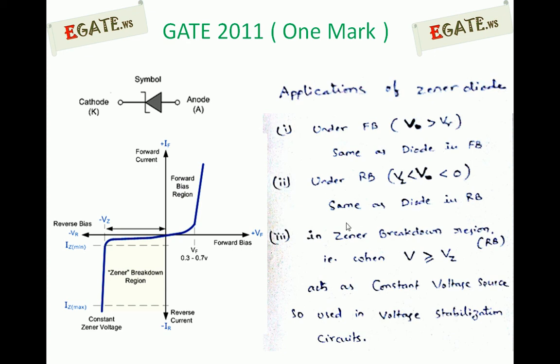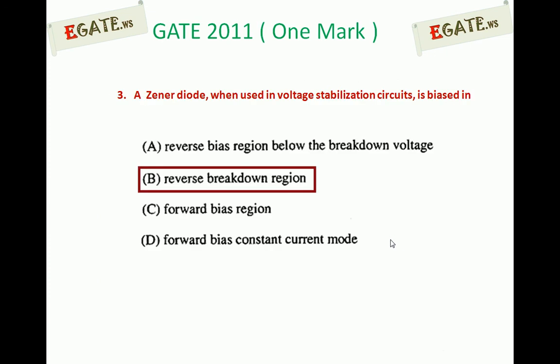In the Zener breakdown region, whenever the applied voltage exceeds Vz, the diode maintains constant voltage and acts as a constant voltage source — which is the basis of voltage stabilization circuits or voltage regulators. The correct answer is therefore reverse breakdown region (b), since the Zener breakdown region always occurs under reverse bias and negative voltage is applied.